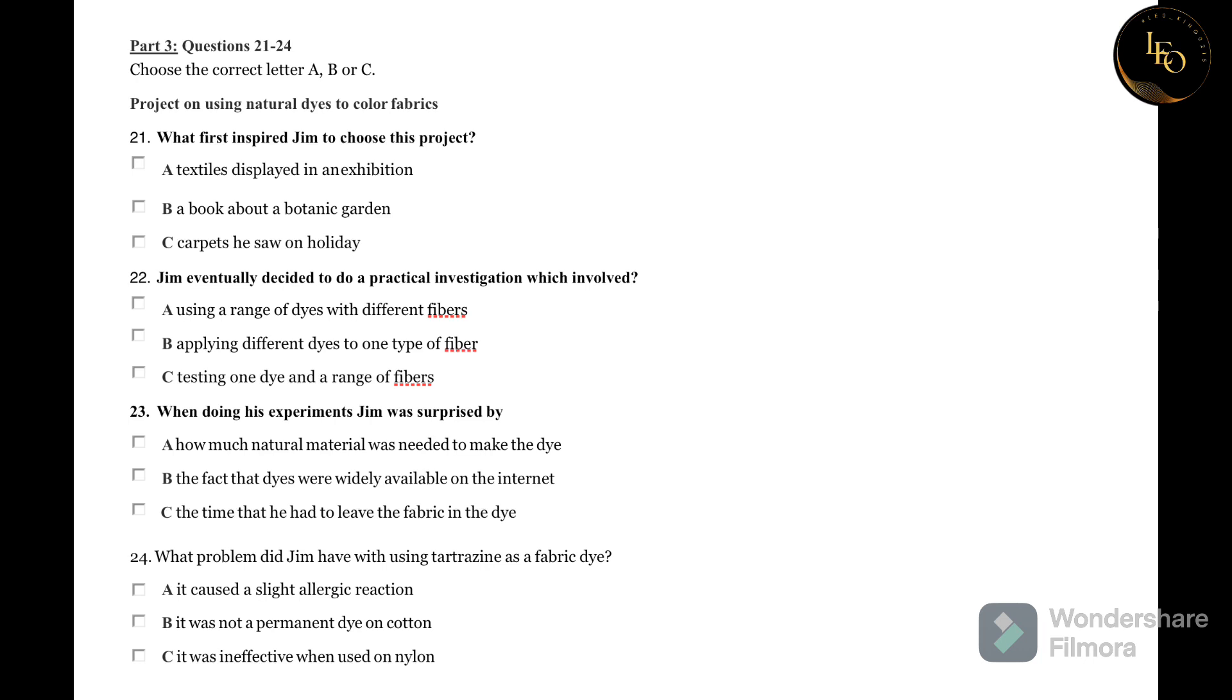OK, Jim, you wanted to see me about your textile design project. That's right. I've been looking at how a range of natural dyes can be used to colour fabrics like cotton and wool. Why did you choose that topic? Well, I got a lot of useful ideas from the museum, you know, at that exhibition of textiles. But I've always been interested in anything to do with colour. Years ago, I went to a carpet shop with my parents when we were on holiday in Turkey, and I remember all the amazing colours. They might not all have been natural dyes. Maybe not. But for the project, I decided to follow it up. And I found a great book about a botanic garden in California that specialises in plants used for dyes.